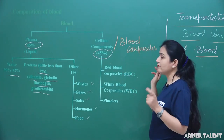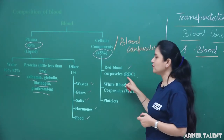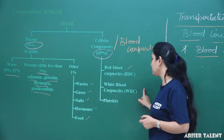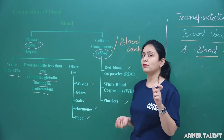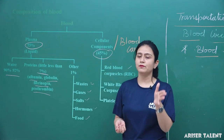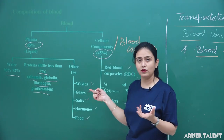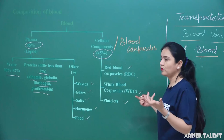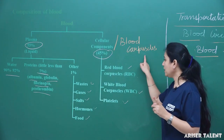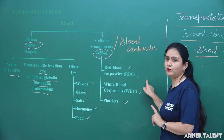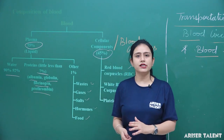The blood corpuscles, which make up 45 percent of the blood, include red blood corpuscles (RBCs), white blood corpuscles (WBCs), and platelets. We will talk about them in detail in our next lecture. Till then, take care. Thank you.